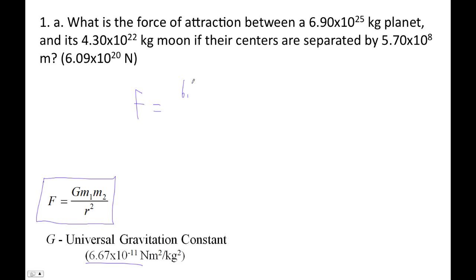So it's 6.67, and then I'm going to write an E there because that's what I'm going to do with my calculator, minus 11. And then it's a planet and a moon, right? So 6.90E25, and then 4.3E22, all these numbers in scientific notation.